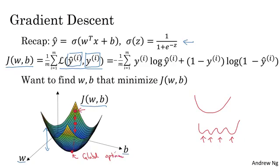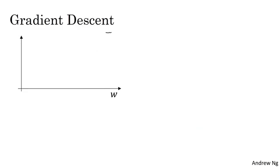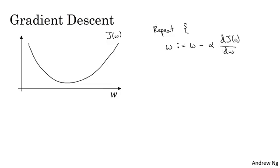So this picture illustrates the gradient descent algorithm. Let's write out a bit more of the details. For the purpose of illustration, let's say that there's some function J of w that you want to minimize. To make this easier to draw, I'm going to ignore b for now. So gradient descent does this: We're going to repeatedly carry out the following update. We're going to take the value of w and update it using w := w minus alpha times the derivative dJ(w)/dw. And we'll repeatedly do that until the algorithm converges.